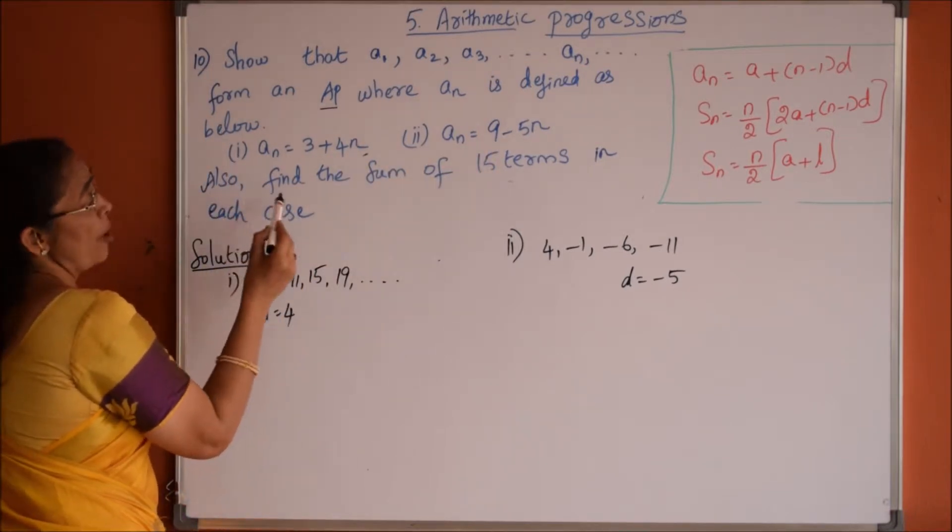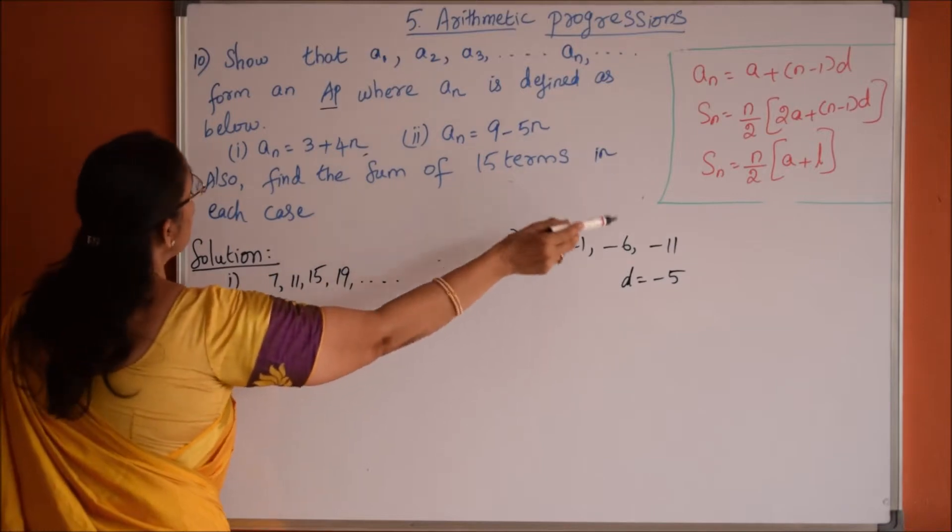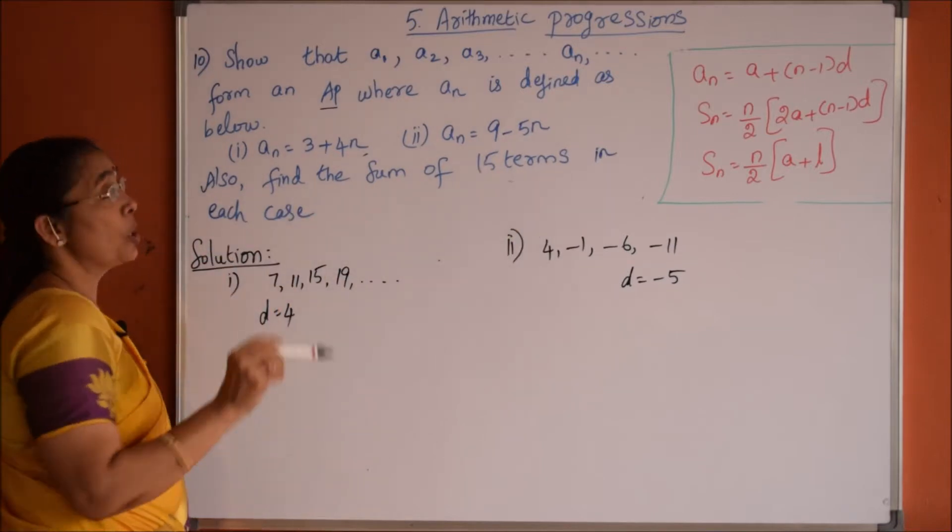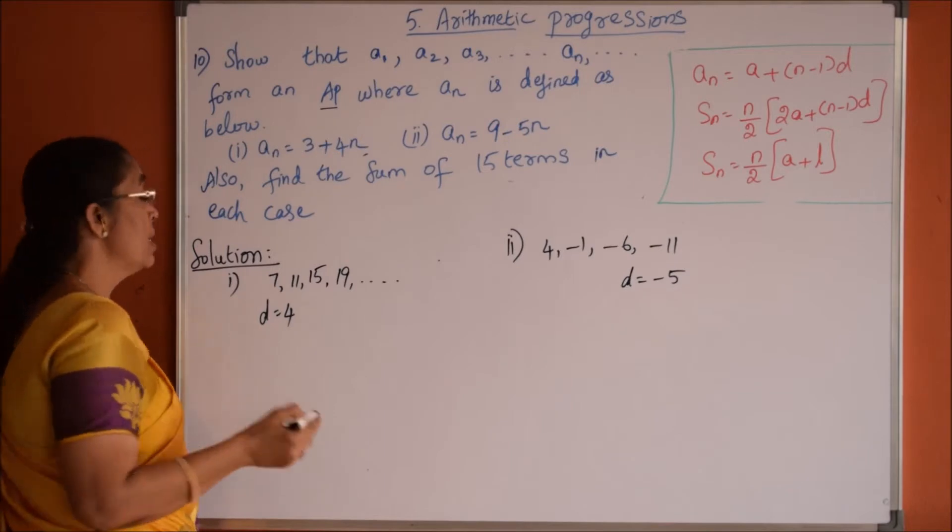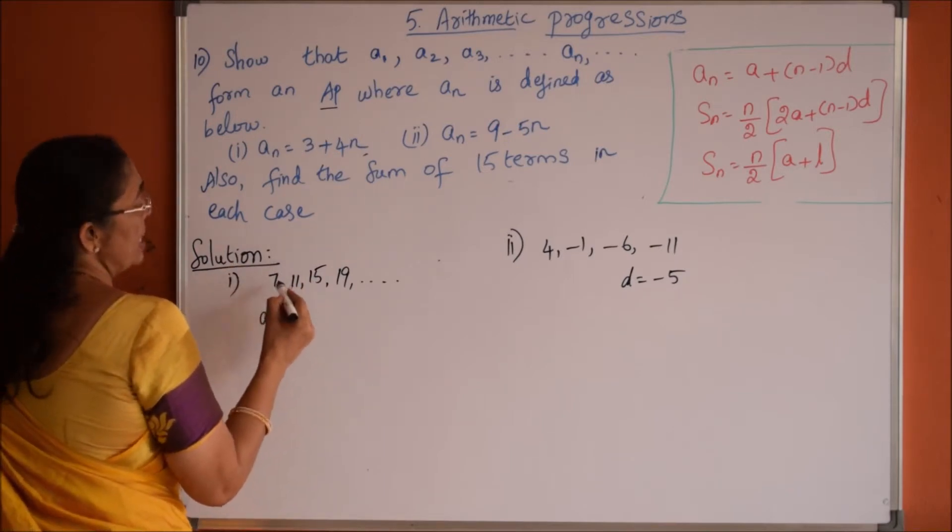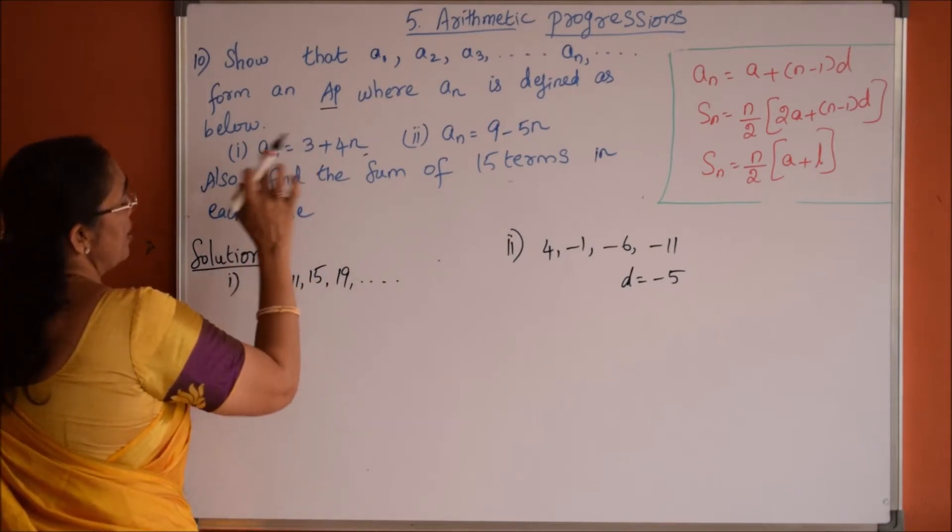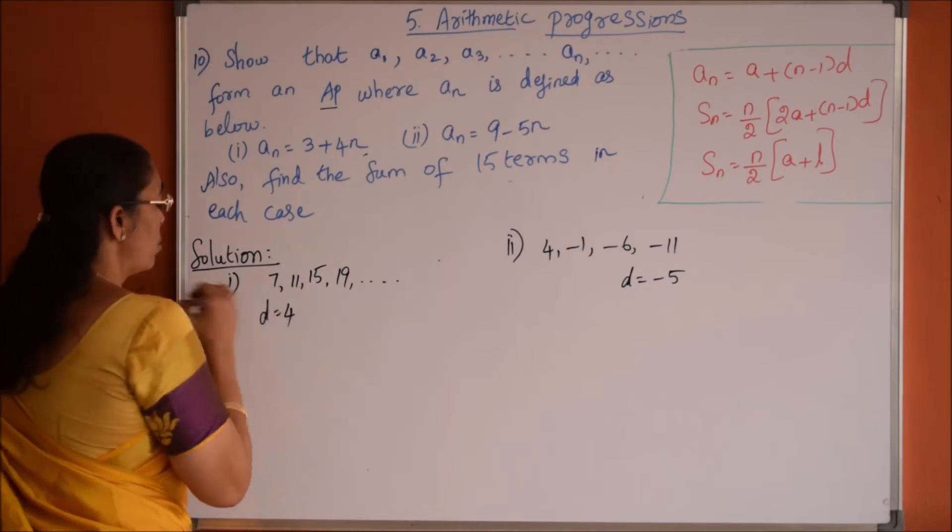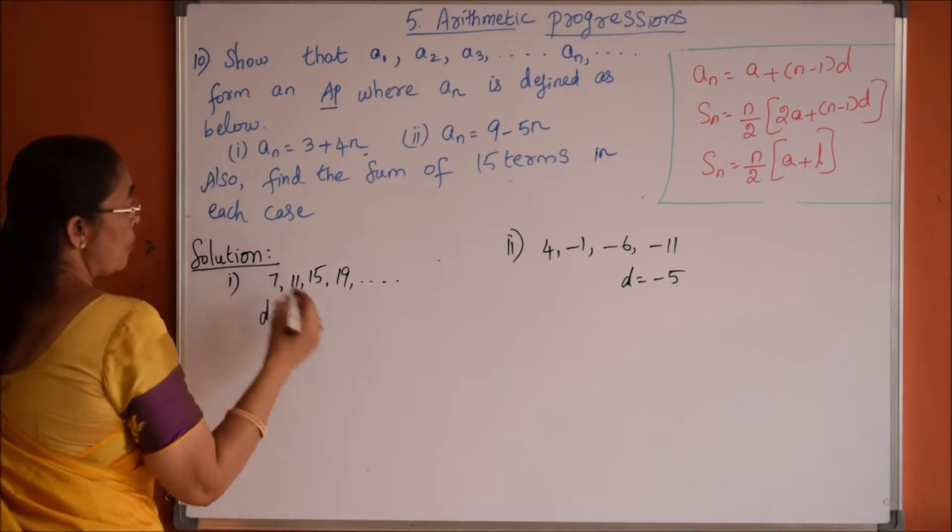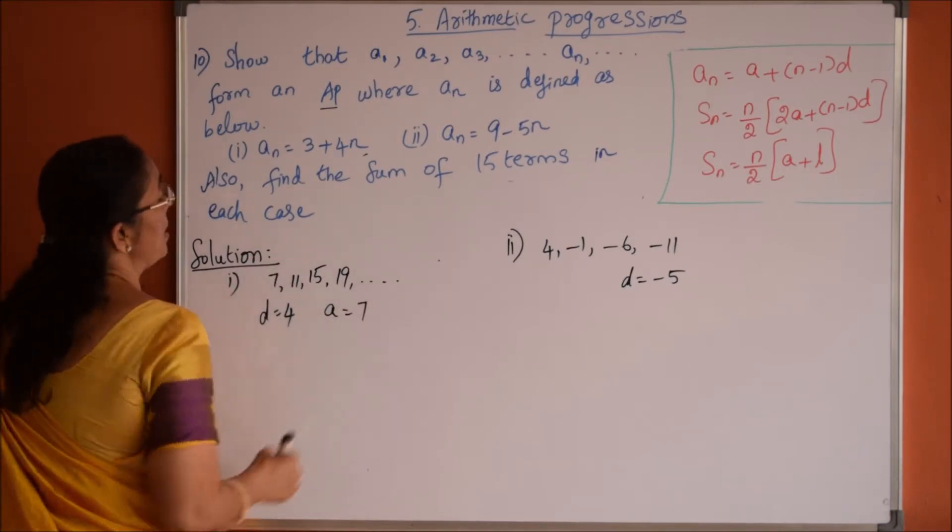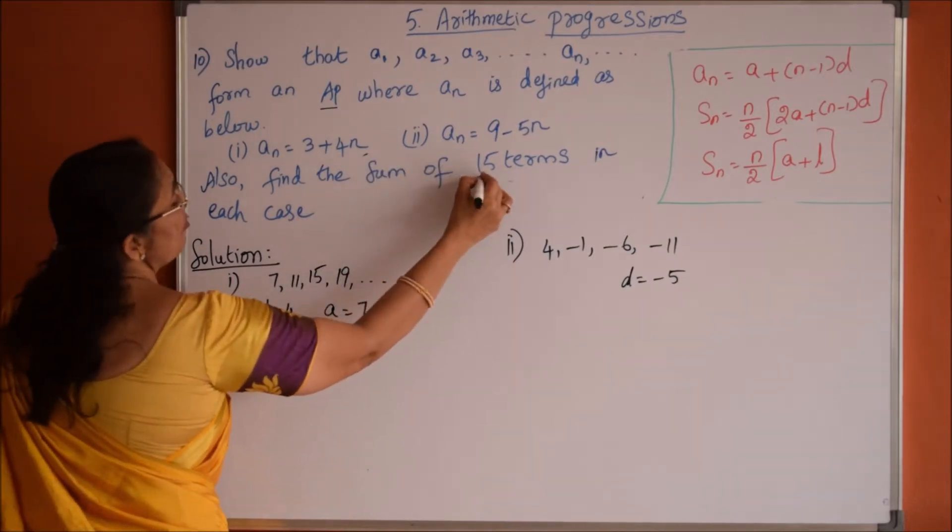Also find the sum of 15 terms in each case. So already we proved these two are forming an AP and we got the list of numbers as 7, 11, 15, 19 for the first one and we got the common difference as 4. So what will be the a value here? 7. The question is sum of 15 terms.